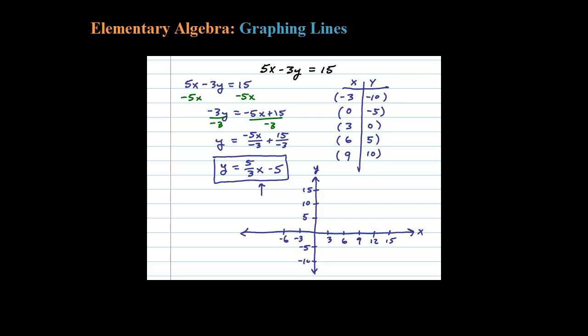So here's my blank Cartesian coordinate system. Now let's go ahead and graph the points. Negative 3 comma negative 10 is right about there. 0 comma negative 5, that's my y-intercept.